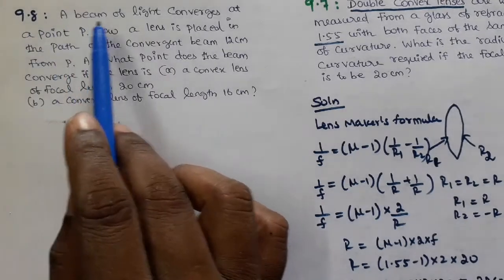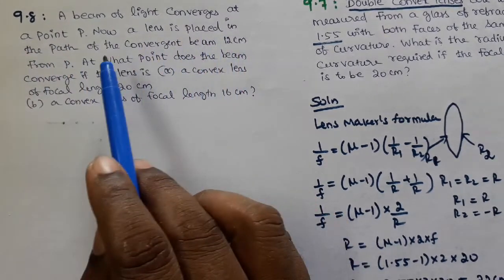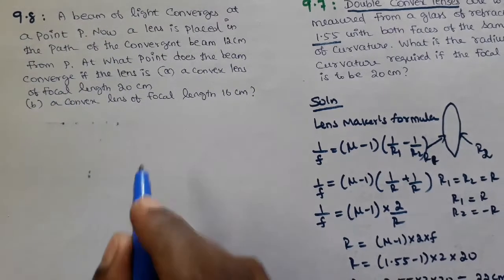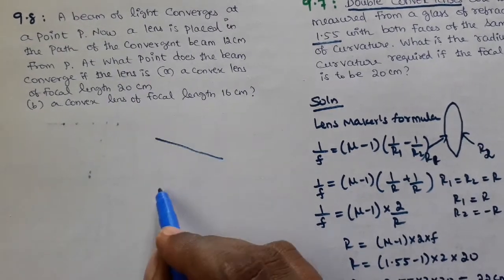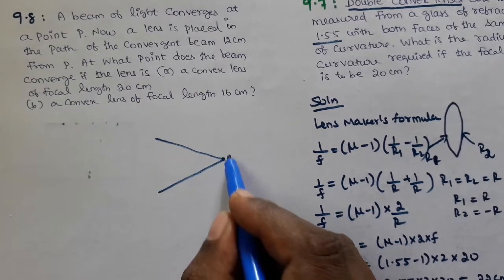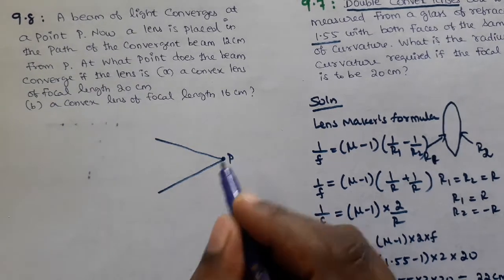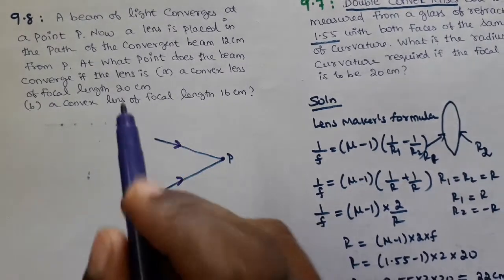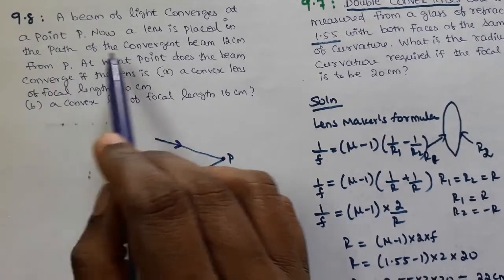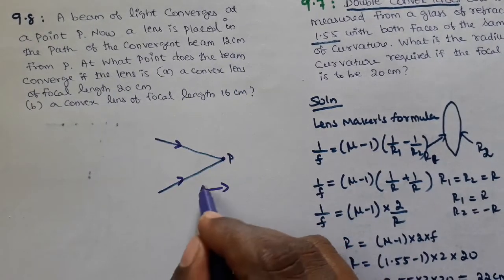Question 9.8: A beam of light converges at point P. A lens is placed in the path of the converging beam, 12 cm from point P. At what point does the beam converge now?